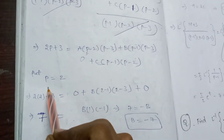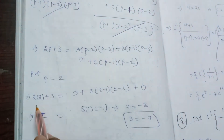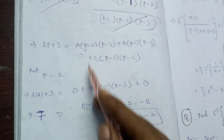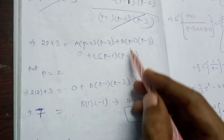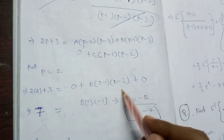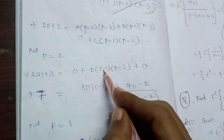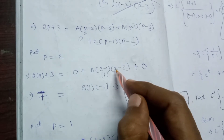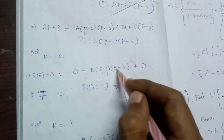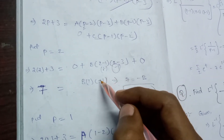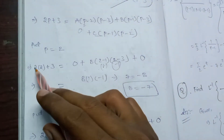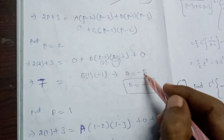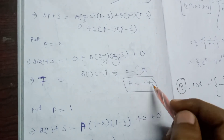Put p equal to 2. Then 2 times 2 plus 3 equals 7. On the right side, the A and C terms vanish. We get B times (2 minus 1) times (2 minus 3) equals B times 1 times minus 1 equals minus B. So 7 equals minus B, therefore B equals minus 7.